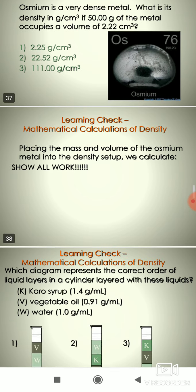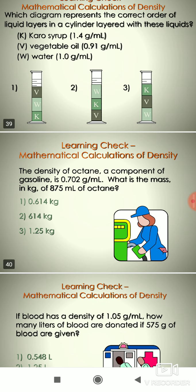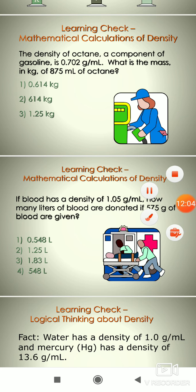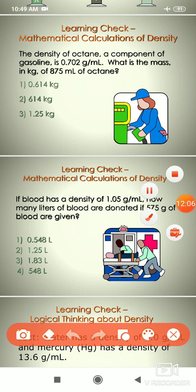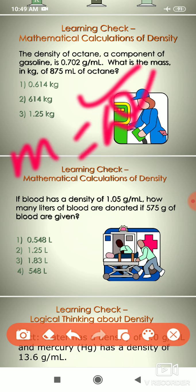Next question: The density of octane, a component of gasoline, is given in g/ml. What is the mass of a given volume of octane? Since density = mass / volume, mass = density × volume. Multiply those terms to solve. Third question: Blood has a density of a given value — find the mass using mass = density × volume. Try to solve these questions.